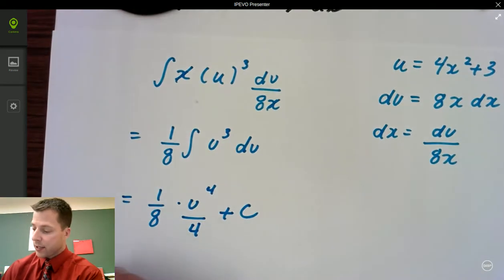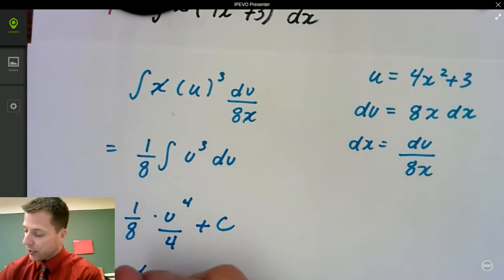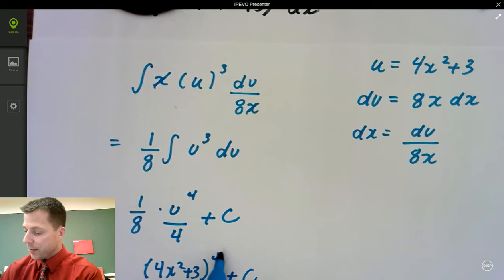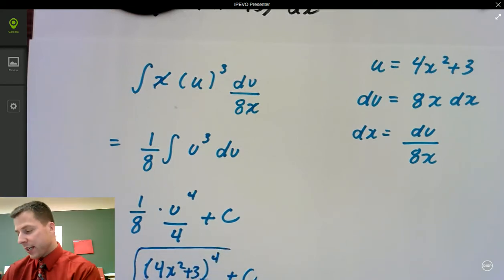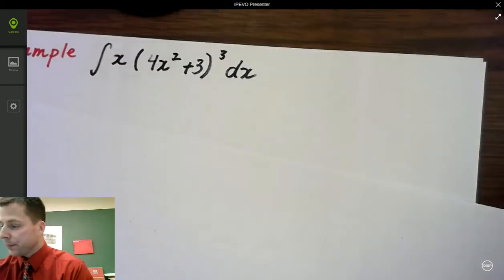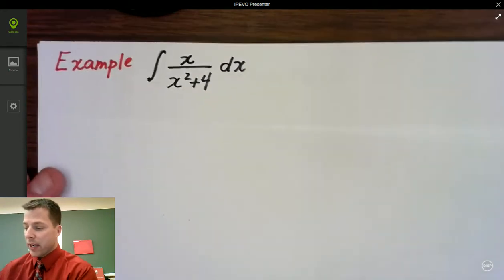So that's 1 over 32. Our u value is 4x squared plus 3. So 4x squared plus 3. There's the substitution to the fourth power plus c. And there's our second example.